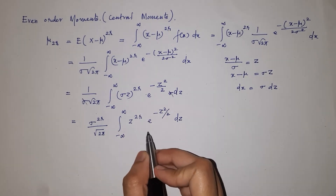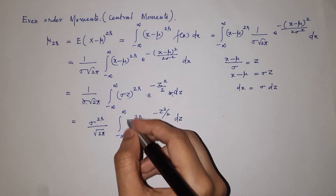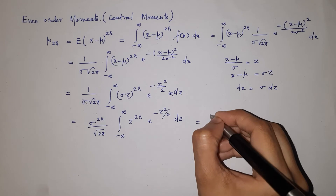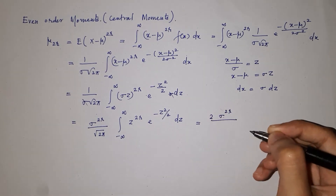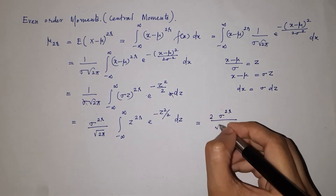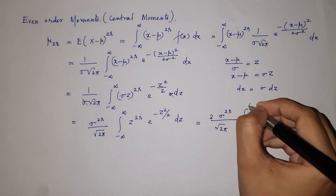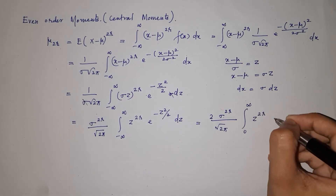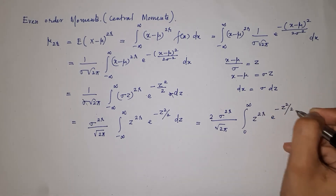This integrand is an even function, so we can write the integral from minus infinity to infinity as 2 times the integral from 0 to infinity. This gives 2 times sigma raised to 2r over root 2 pi, times the integral from 0 to infinity of z raised to 2r into e raised to minus z squared over 2, dz.